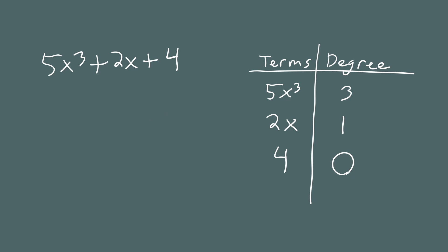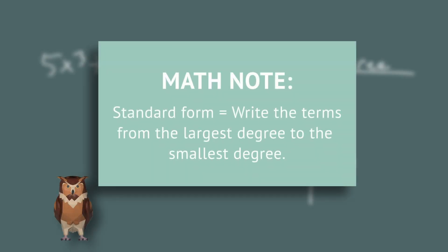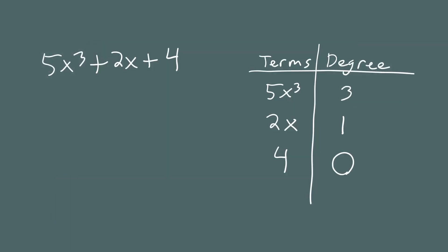Let's focus on the definition of standard form. We have the polynomial 5x cubed plus 2x plus 4, which has three terms — 5x cubed, 2x, and 4 — with degrees 3, 1, and 0 respectively. The definition of standard form is simple: write the terms in order of degree from the largest degree to the smallest. The largest degree is 3, so we write 5x cubed first; then 2x with degree 1; and finally the constant term 4 with degree 0.